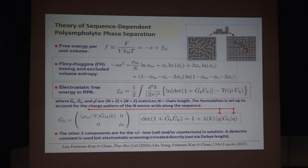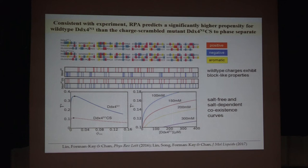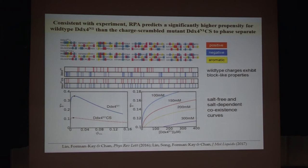We first apply this to DDX4 wild type and the charge-scrambled variant. These are the charge patterns again — this is the wild type, this is the variant. Just by plugging these two sequences in with the charge pattern, we get a phase diagram for the wild type and one for the variant. Right there, we capture the trend: the wild type has a much higher critical temperature than the other one, consistent with the experimental observation that the wild type phase separates and the charge-scrambled variant doesn't. We can also put in salt explicitly in this theory without using the Debye screening exponential as a Yukawa potential, and we can predict the salt dependence from this theory.